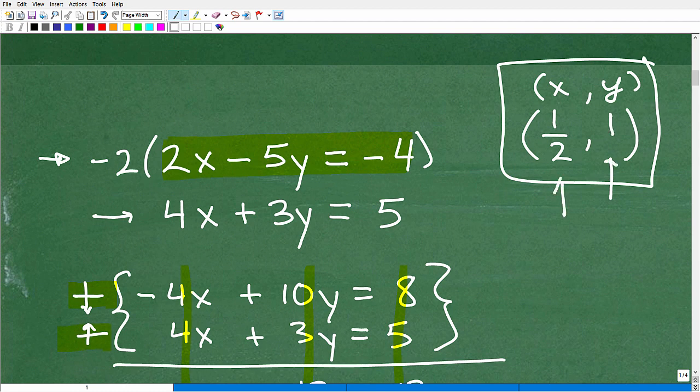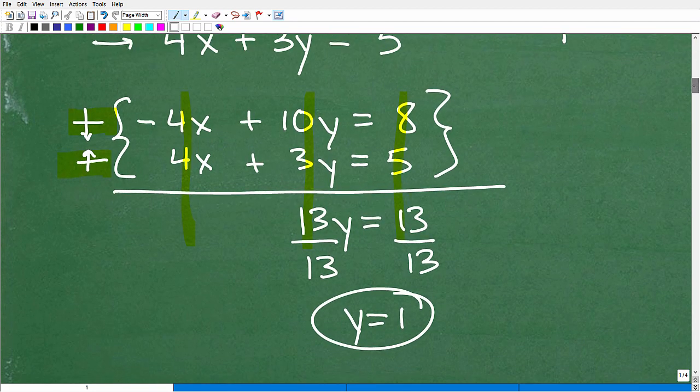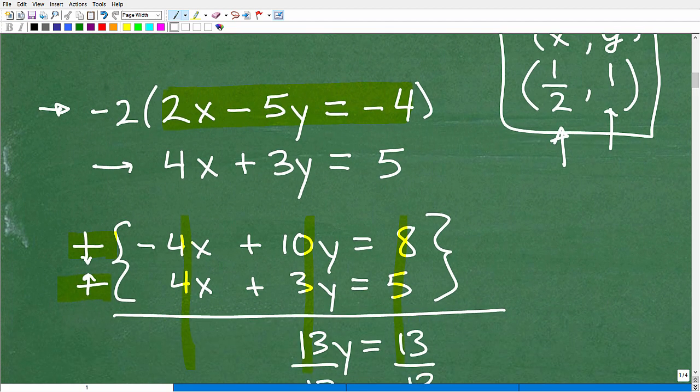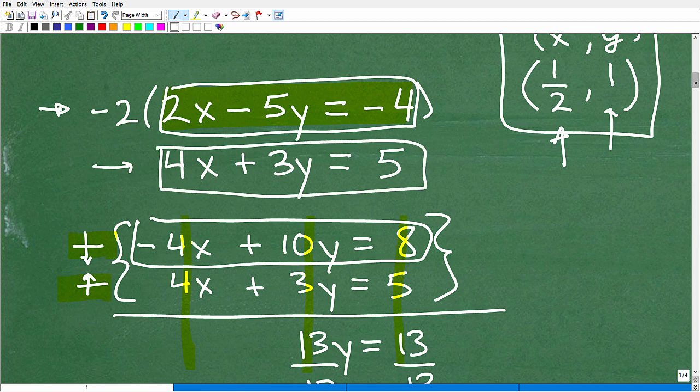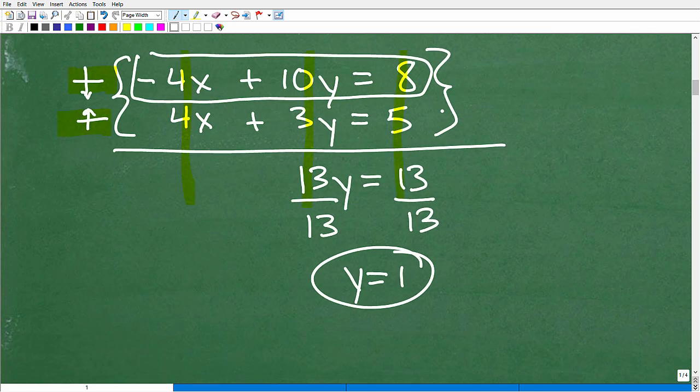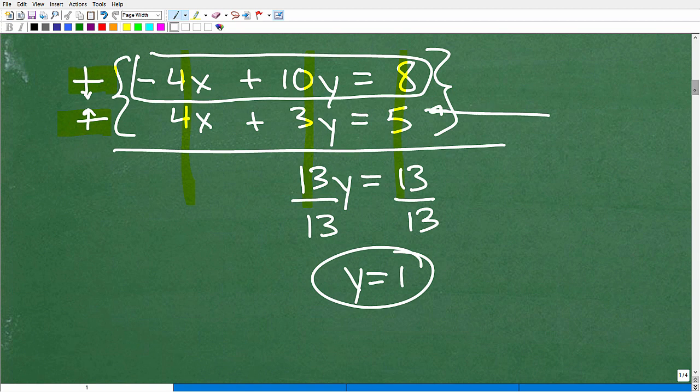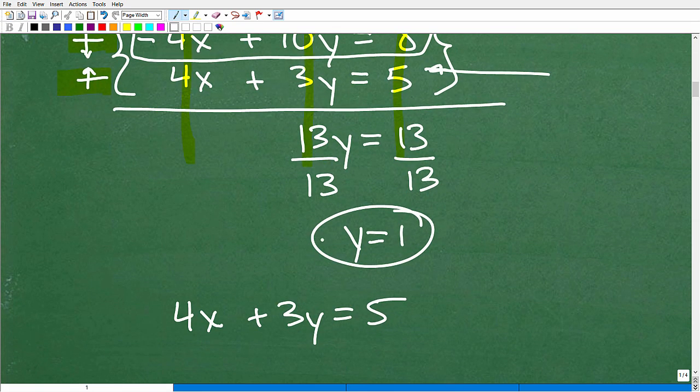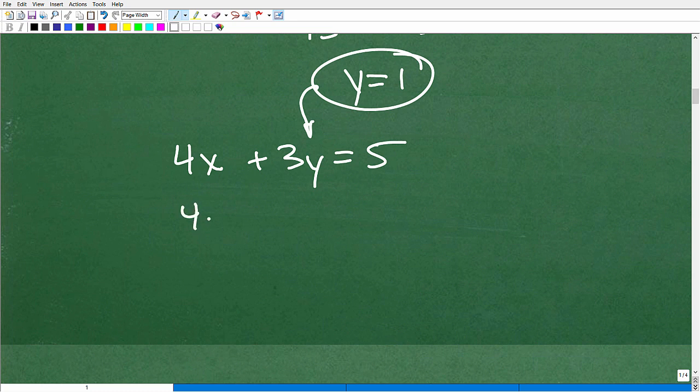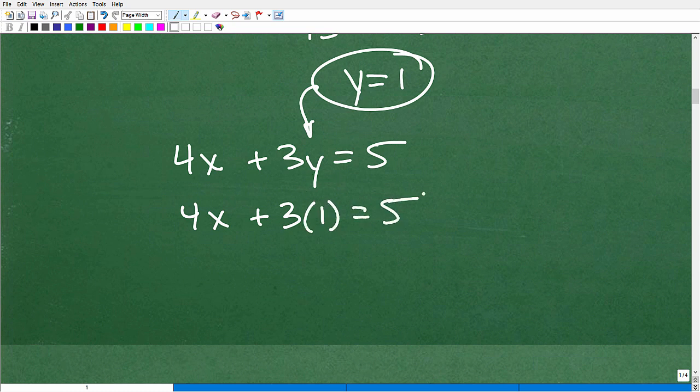Now let's go back up here, and remember, this was my solution. Y is equal to 1, you see right there. Now, let's go get the X. So now that I know that Y is equal to 1, I can use any one of these equations to solve for X. I can use the original equation, this equation, it doesn't make a difference. I'm going to plug in Y for 1. So let's go ahead and use that second equation. So that's 4X plus 3Y equals 5. Now I know that Y is equal to 1. I'm going to replace this Y for 1 and solve for X.